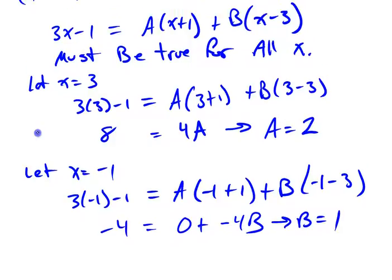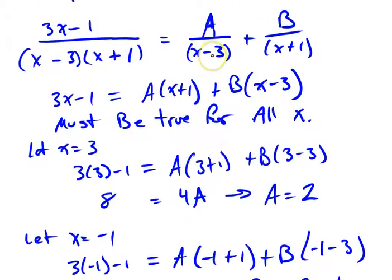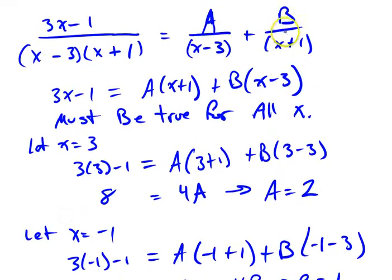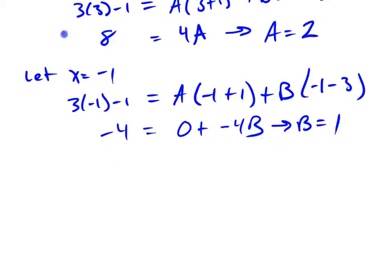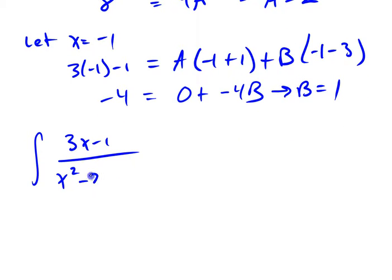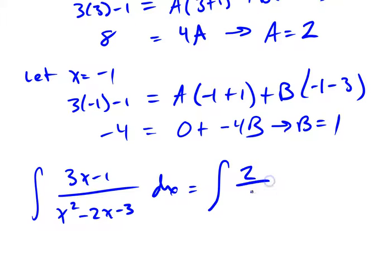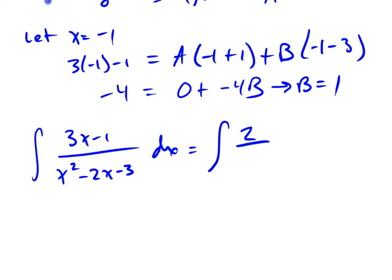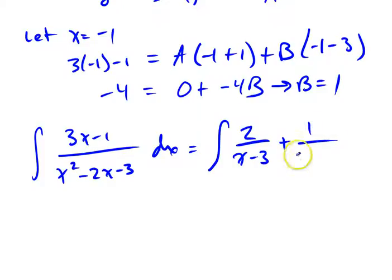Remember now, A was chosen to be the numerator that's going to be over the x minus 3. And the B is chosen to be the numerator over the x plus 1. So my original integral, my original integral of 3x minus 1 over that x squared minus 2x minus 3 dx is equal to the integral of A, which is 2 over x minus 3 plus 1 over x plus 1. And those integrals are equal to each other, because this function over here is equal to the function over there.